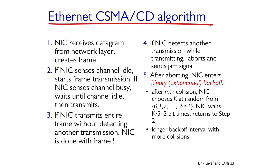The fifth step is the most interesting one — it's the decision of when to transmit again. In order to desynchronize other nodes that tried to transmit during a collision, Ethernet CSMA/CD implements a method called binary exponential backoff. If a particular frame had M collisions, NIC chooses a number K between 0 and 2 to the power of M minus 1, and waits for a period of K times 512 bit times — meaning K times the sufficient amount of time to transmit 512 bits — chosen randomly. Then it returns to step 2 to listen whether the channel is idle again.